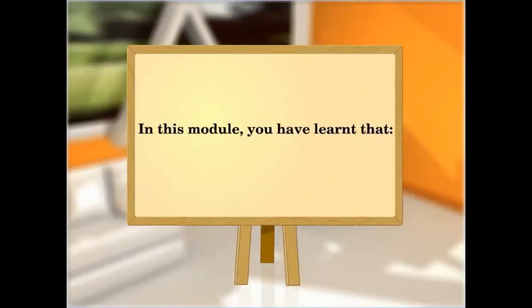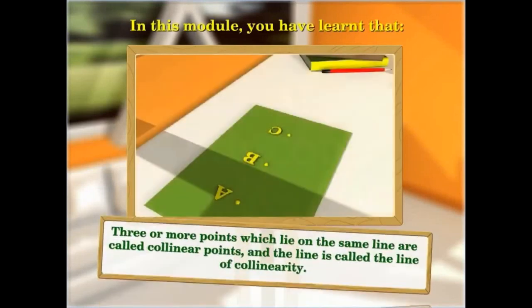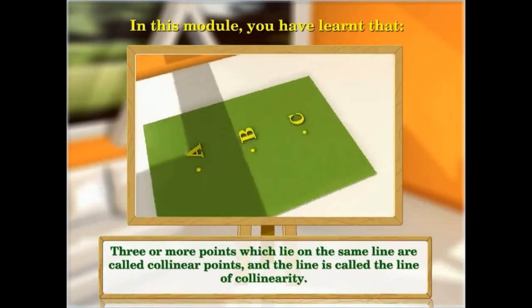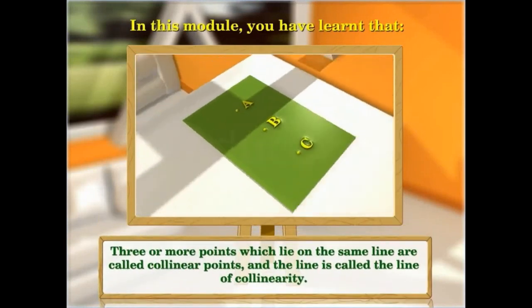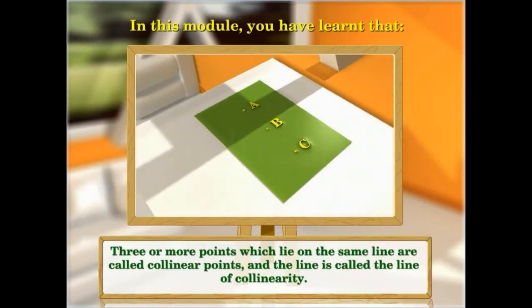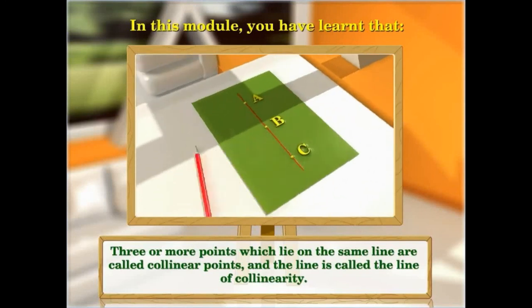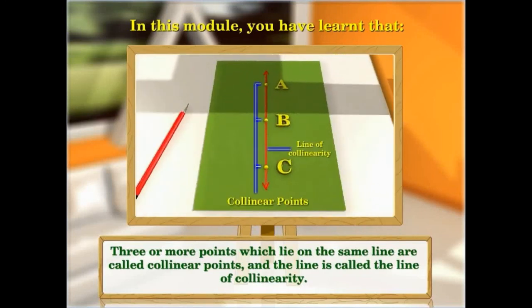In this module, you have learnt that three or more points which lie on the same line are called collinear points, and the line is called the line of collinearity.